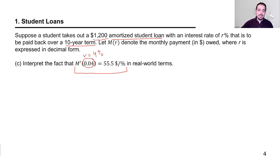Suppose that the derivative at 0.04 equals $55.50 per percent. What does that mean in real-world terms? How do you interpret that?